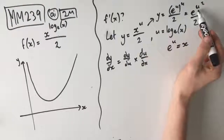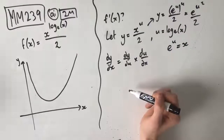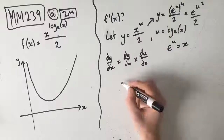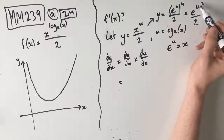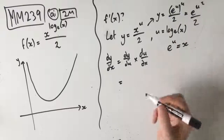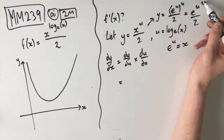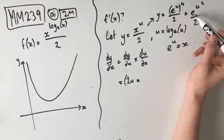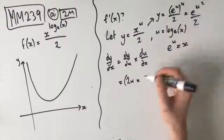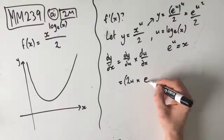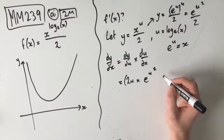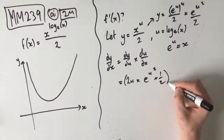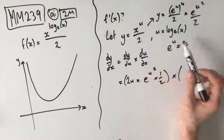Now that our y is in terms of u only, we're going to be able to work out dy du. In terms of the derivative of e to the power of u squared over 2, this is kind of like its own chain rule. So the derivative is equal to the derivative of the function inside it, which is 2u, multiplied by the original — e to the u squared — and then times one half, because we've got this 2 on the bottom. Then we multiply that by the derivative of u, which is 1 over x.